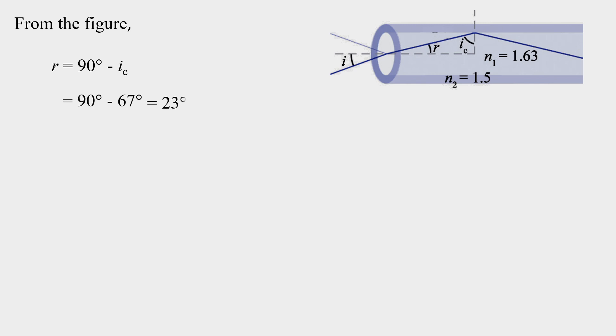From the figure, 90 minus 67 degrees gives 23 degrees.